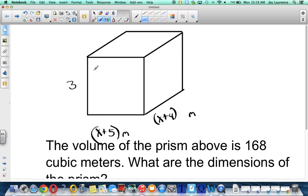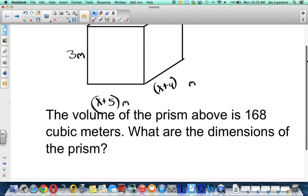Don't forget the meters, Mr. Lawrence. And a quantity of x plus five meters and a quantity of x plus four meters. All right. So the volume of the prism above is 168 cubic meters. What are the dimensions of the prism?